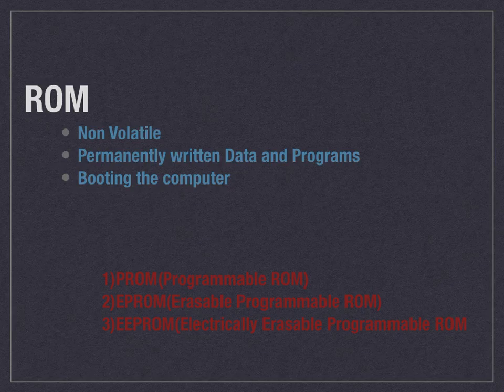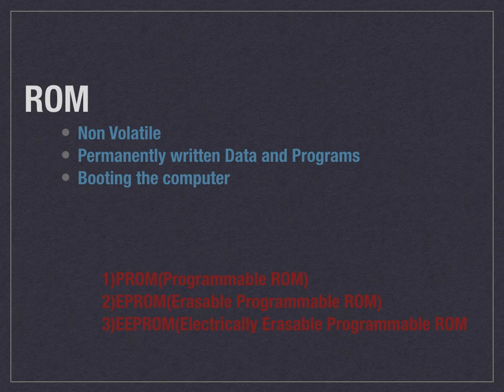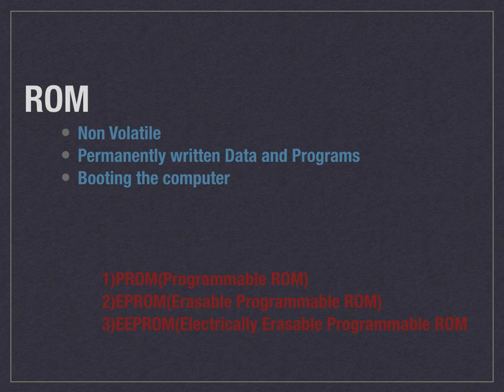That is why it is called read-only memory — the data present inside the ROM cannot be changed or written back. ROM can be classified into three types: PROM, EPROM, and EEPROM. PROM means programmable ROM. PROM can be programmed only once and read many times. PROMs retain their contents without the flow of electricity — it is a non-volatile memory.